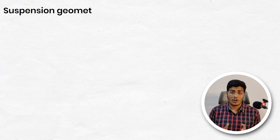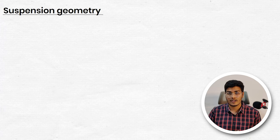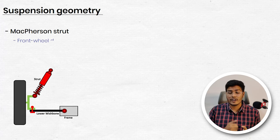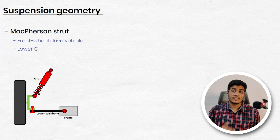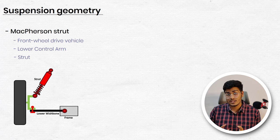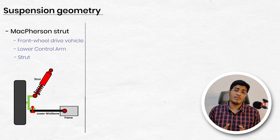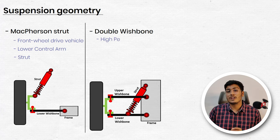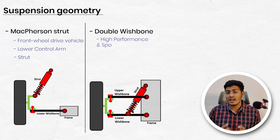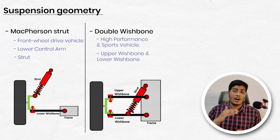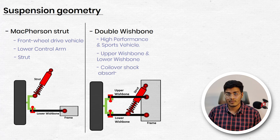Different layouts of control arm, shock absorber, and springs make different kinds of suspension geometry. For example, McPherson strut — this is a popular choice for front wheel drive vehicles and it contains a lower control arm and a strut which supports suspension and steering. Similarly, we have double wishbone suspension geometry which is usually used in high performance and sport cars. In this geometry we have a lower wishbone, an upper wishbone and a coilover shock absorber.